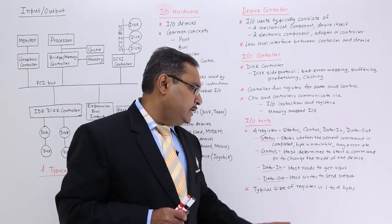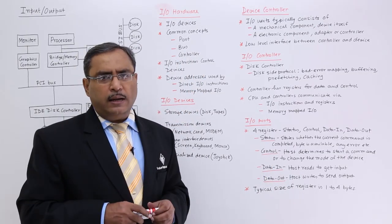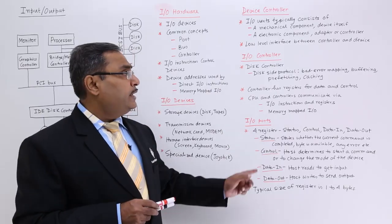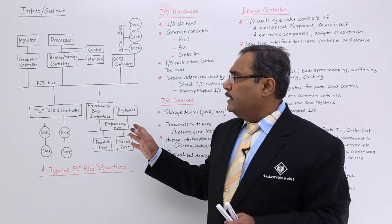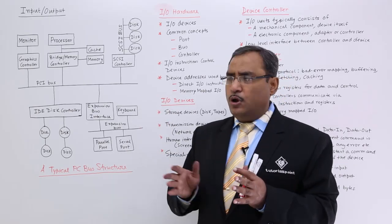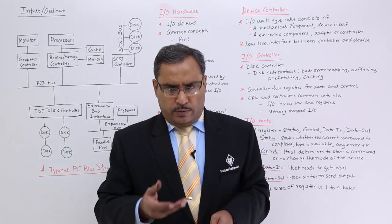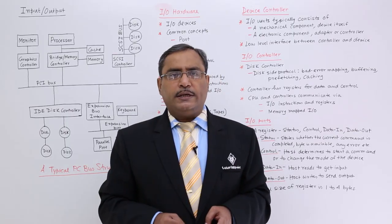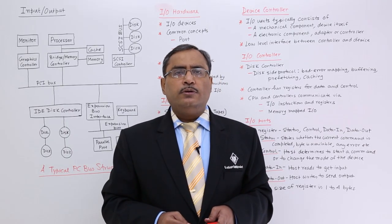The typical size of these registers is 1 to 4 bytes, depending on the particular I/O port. In this particular lecture, we have discussed what is input-output, what is the basic block diagram, and other important features. In the next video, we will be discussing some other topics on input-output. Please watch them. Thanks for watching this video.